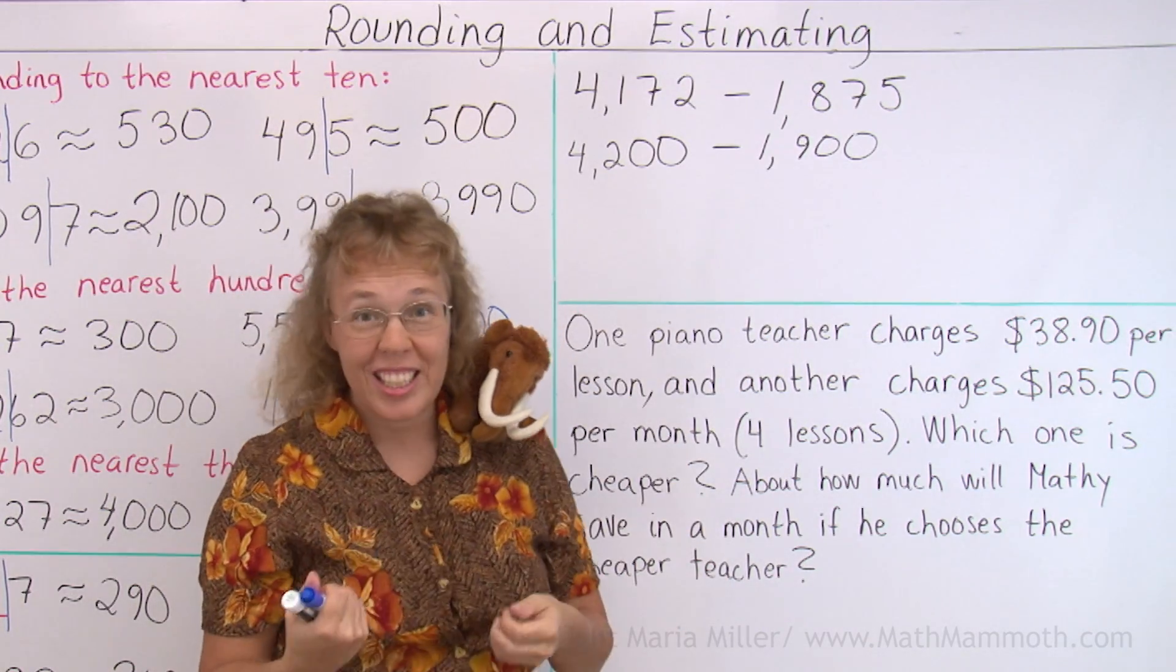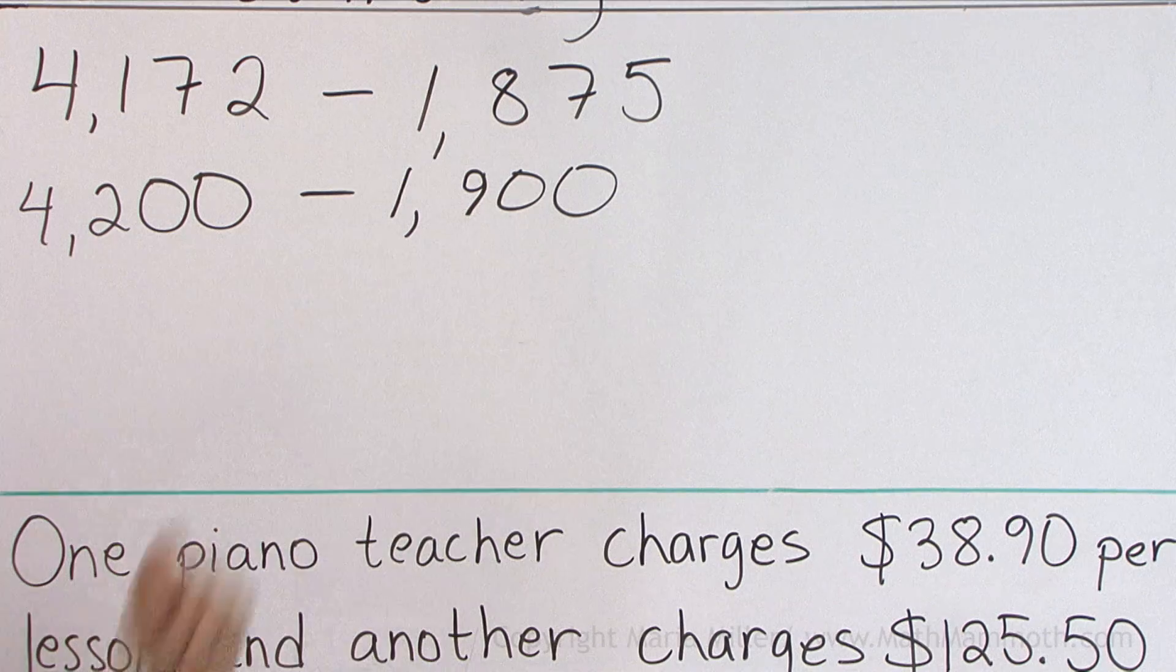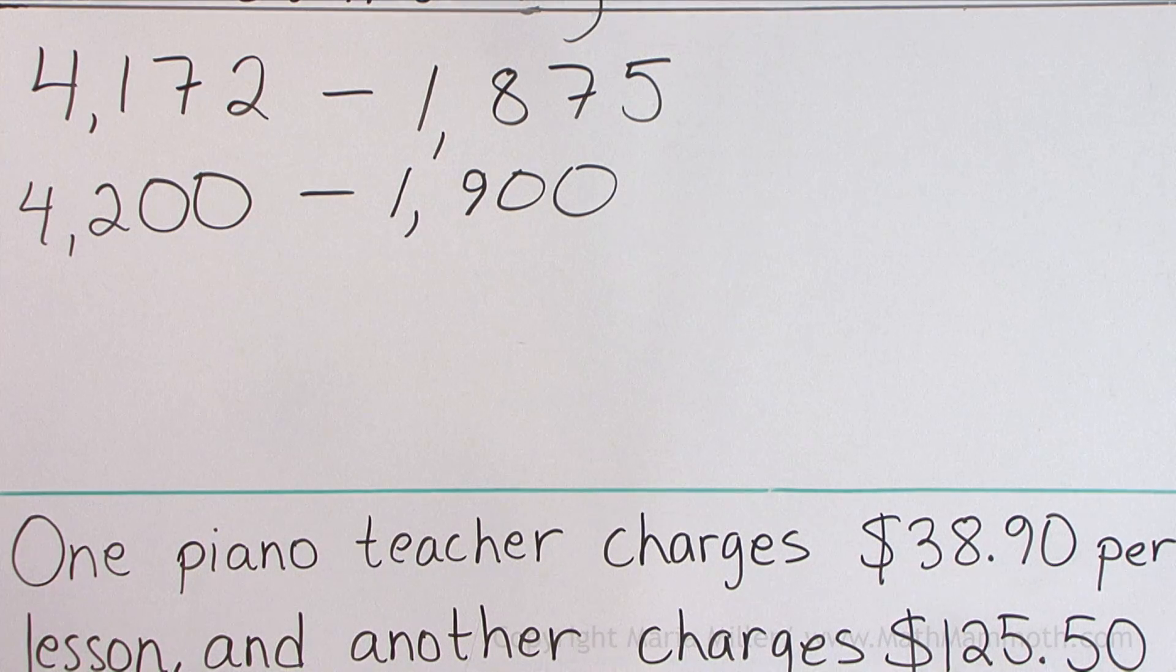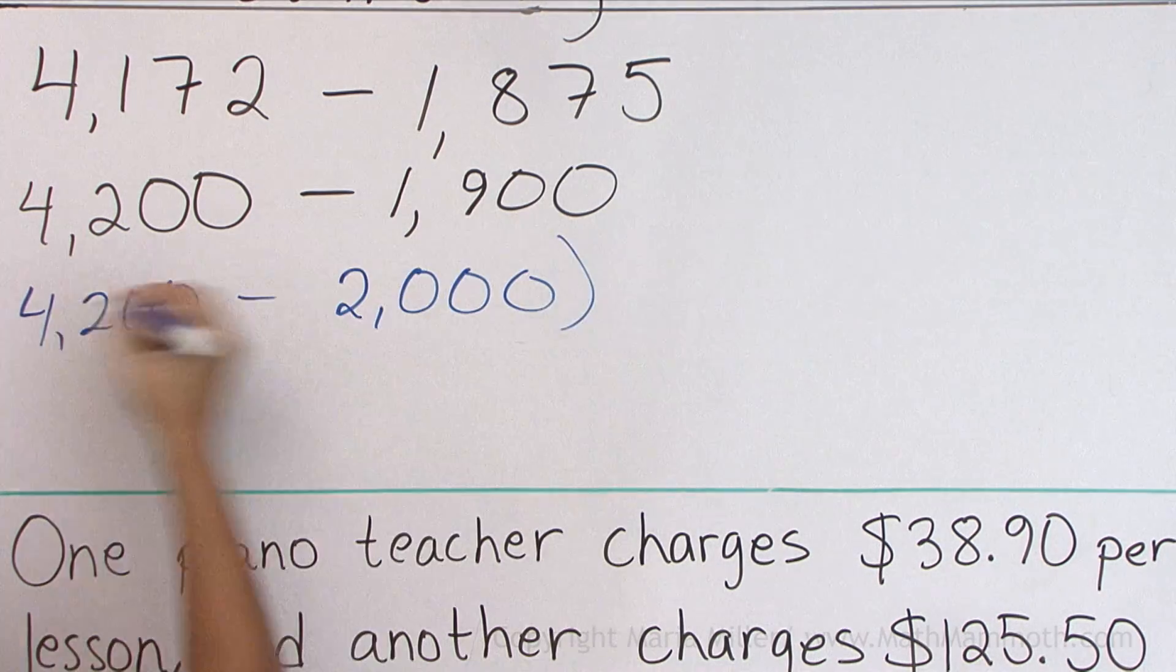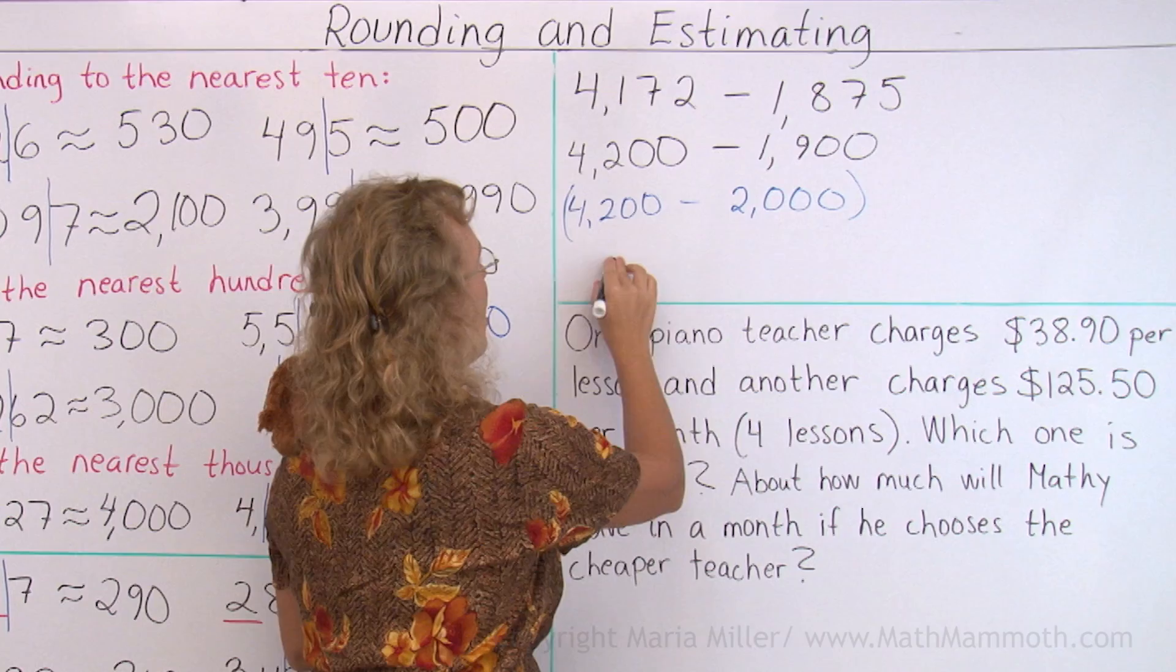I'm gonna tell you a little trick here that helps you. Since this is so close to two thousand, let's first subtract four thousand two hundred minus two thousand. This is an easy subtraction, my answer is two thousand two hundred.